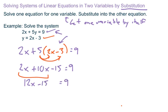We would combine our like terms and get 12x minus 15 equal 9. And to solve for x, we could add 15 on both sides.